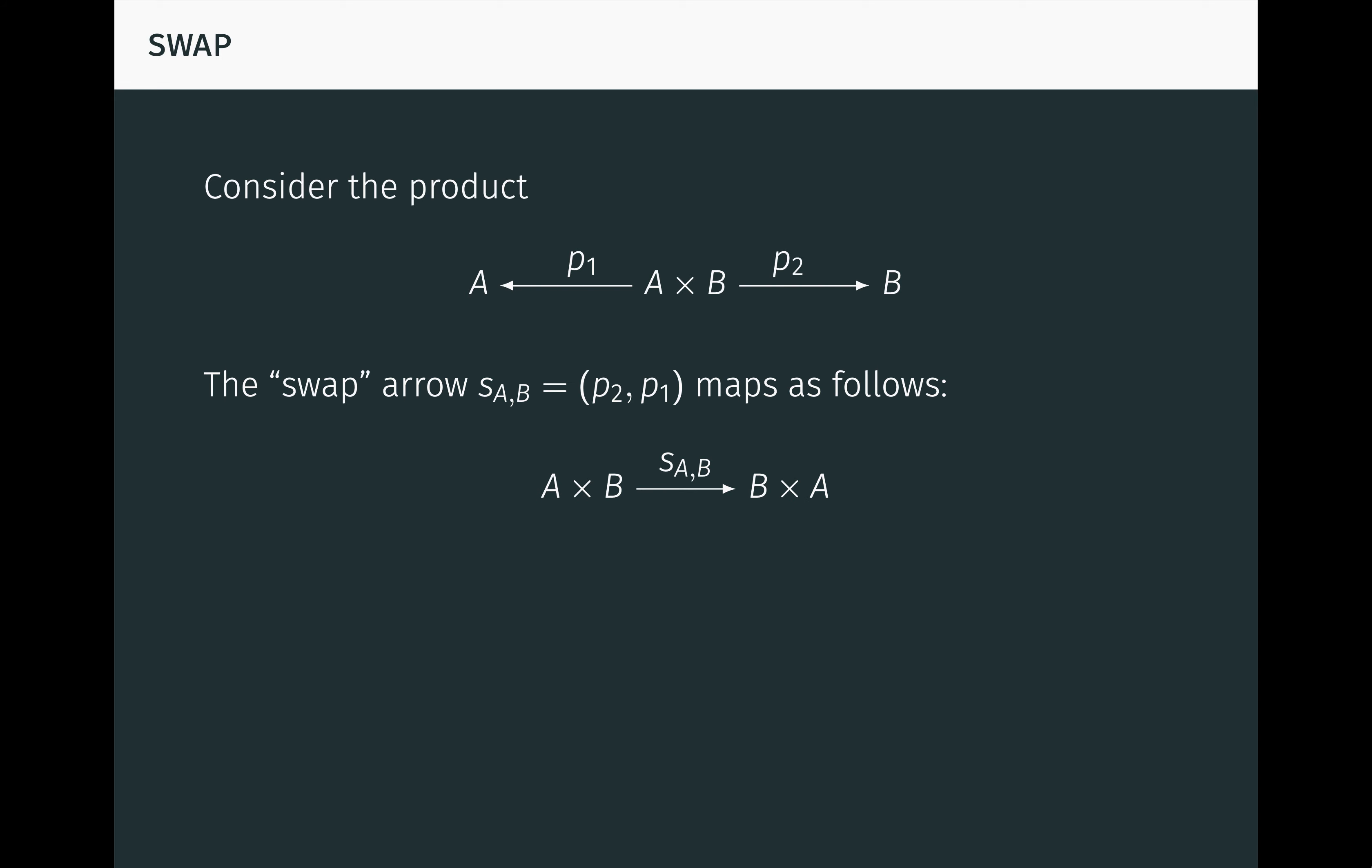Recall that we introduced products in the last video. The swap arrow SAB, which pairs the projection arrows P2 and P1 in that order, maps from A times B to B times A, as seen here. Assuming the category has all finite products, for any objects C and D, there is a corresponding swap arrow SCD, which maps from C times D to D times C.